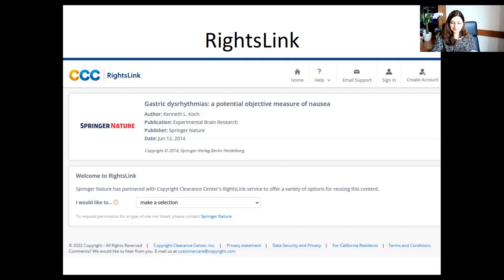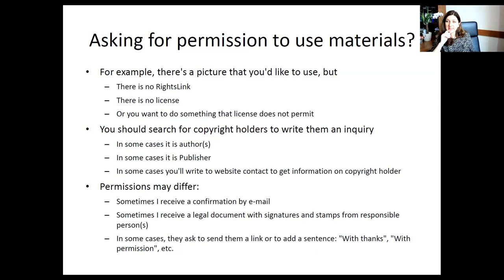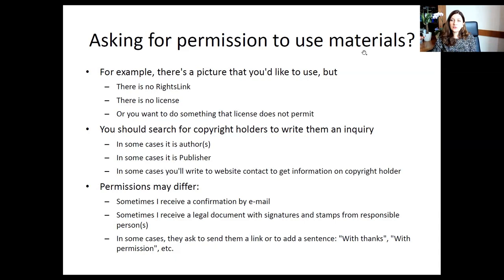What if there is no license on the website, no RightsLink, or the license prevents what you want to do — for example, it says no derivatives and you want to make a derivative? In that case you should write an email. Who to write is a tricky question: you should write to the copyright holder. In most cases it's the author, but for journals it's probably the publisher. For websites, search for a contact on the website and ask who the copyright holder is to know where to send your next email.